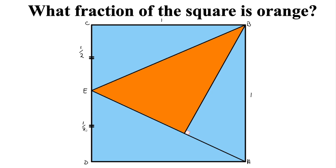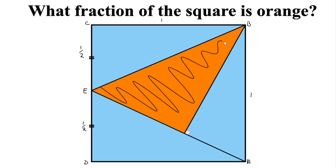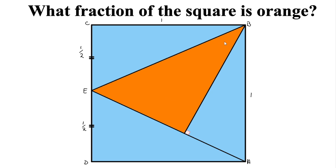Now, in order to find the area of our orange triangle, I would take the area of our square and subtract the area of our three blue triangles, and the remainder would be the area of our orange triangle. So let's find out the areas of triangles BCE and ADE.